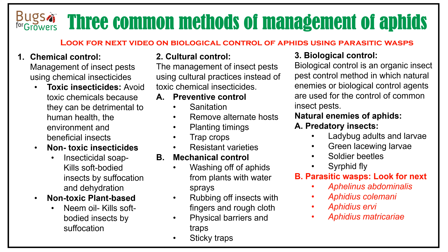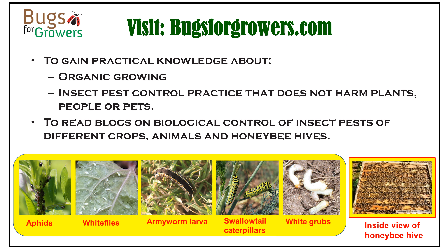As mentioned, these biological agents are not harmful to humans, pets, or other beneficial organisms. In the next video, I will be talking about using parasitic wasps as biological control agents for the management of aphids. Visit bugsforgrowers.com to gain practical knowledge about organic growing and insect pest control practices that do not harm plants, people, or pets, and to read blogs on biological control of insect pests of different crops, animals, and honeybee hives.